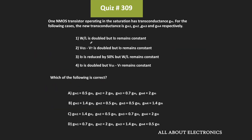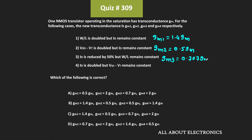To summarize: in the first case when W/L ratio is doubled, gm1 = 1.41 times gm. In the second case when Vgs-Vt is doubled and id is kept fixed, gm2 = 0.5 times gm. In the third case when id is reduced by 50%, gm3 = 0.707 times gm. In the fourth case when id is doubled, gm4 = 2 times gm. Therefore, option C is the correct answer.